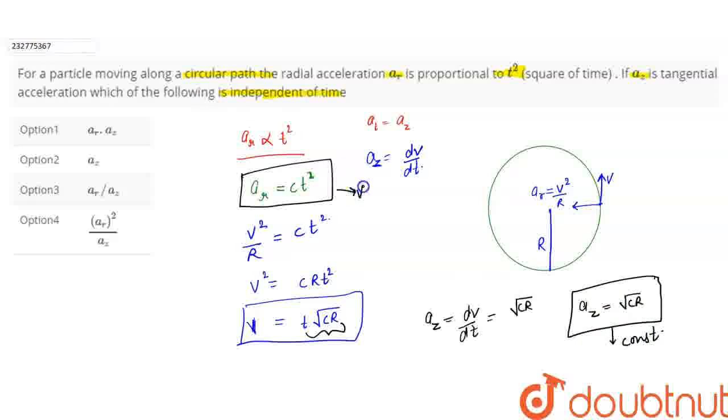Option number 2 has AR by az. AR has t squared and az is constant, so it will be t squared which depends on time. So it is independent of time. What is the answer? Option number 2.